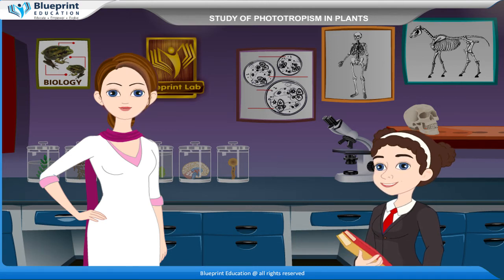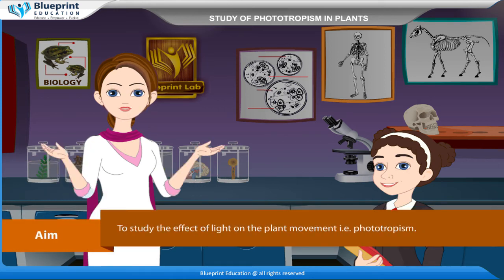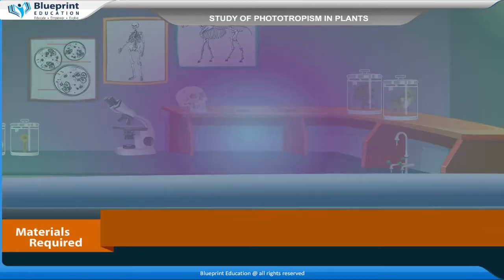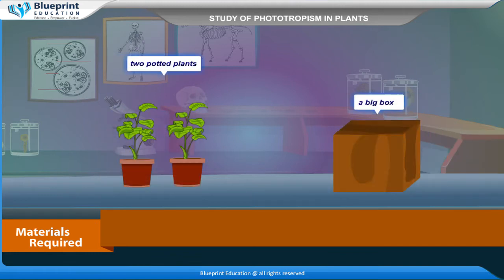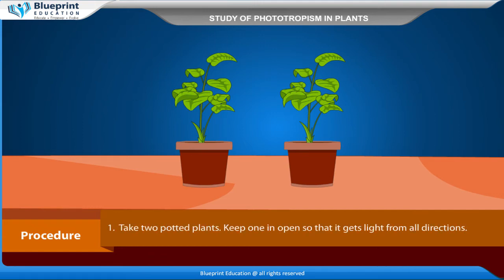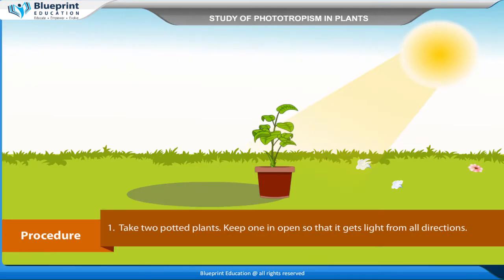Let's do an experiment to study the effect of light on plant movement, that is phototropism. Our aim is to study the effect of light on plant movement. The materials required are two potted plants and a big box.